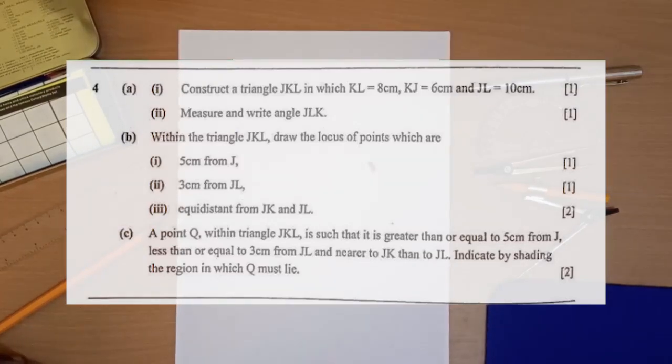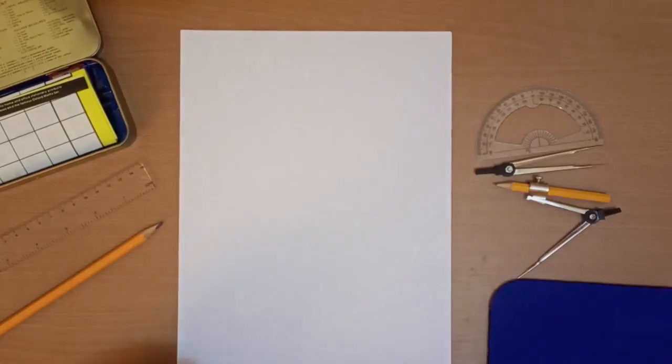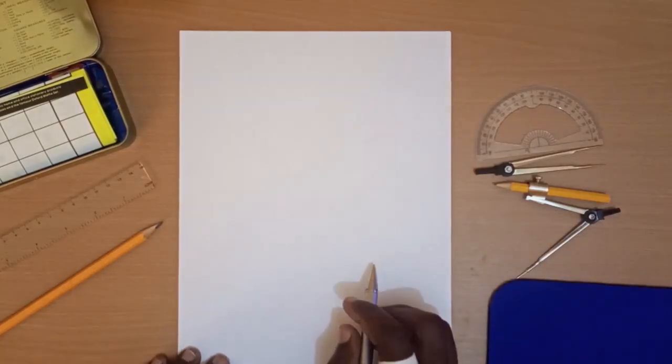Construct a triangle JKL in which KL is equal to 8 cm, KJ is equal to 6 cm, and JL is equal to 10 cm. Measure and write angle JLK.